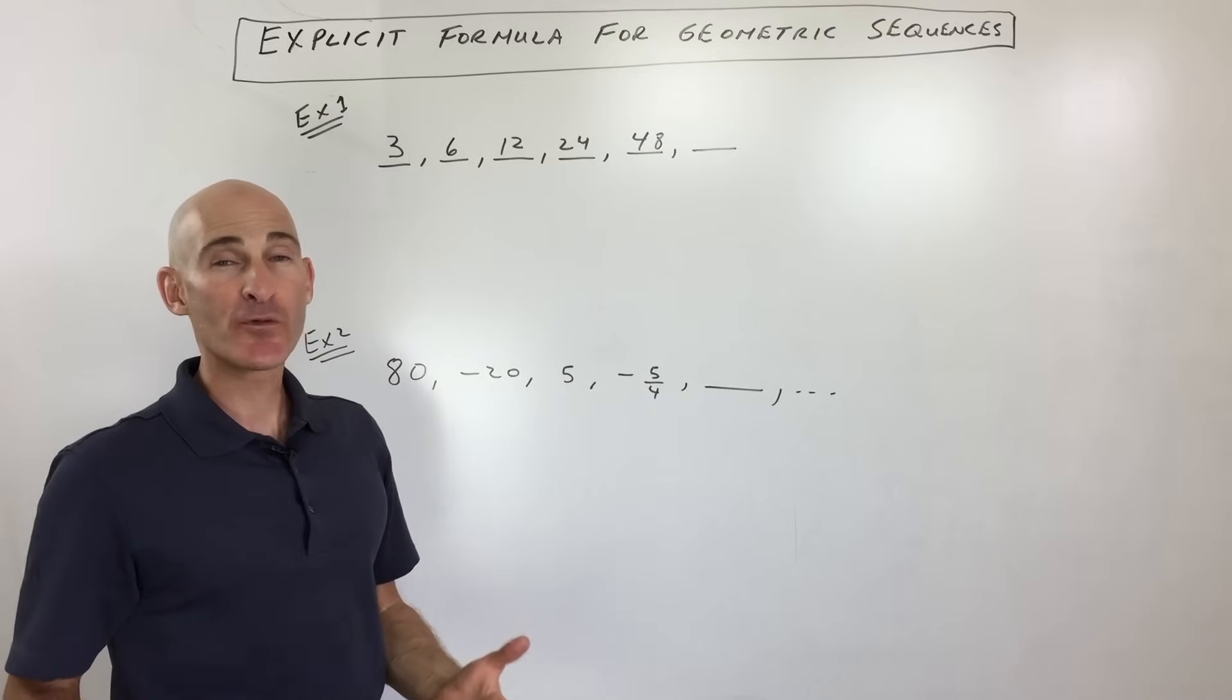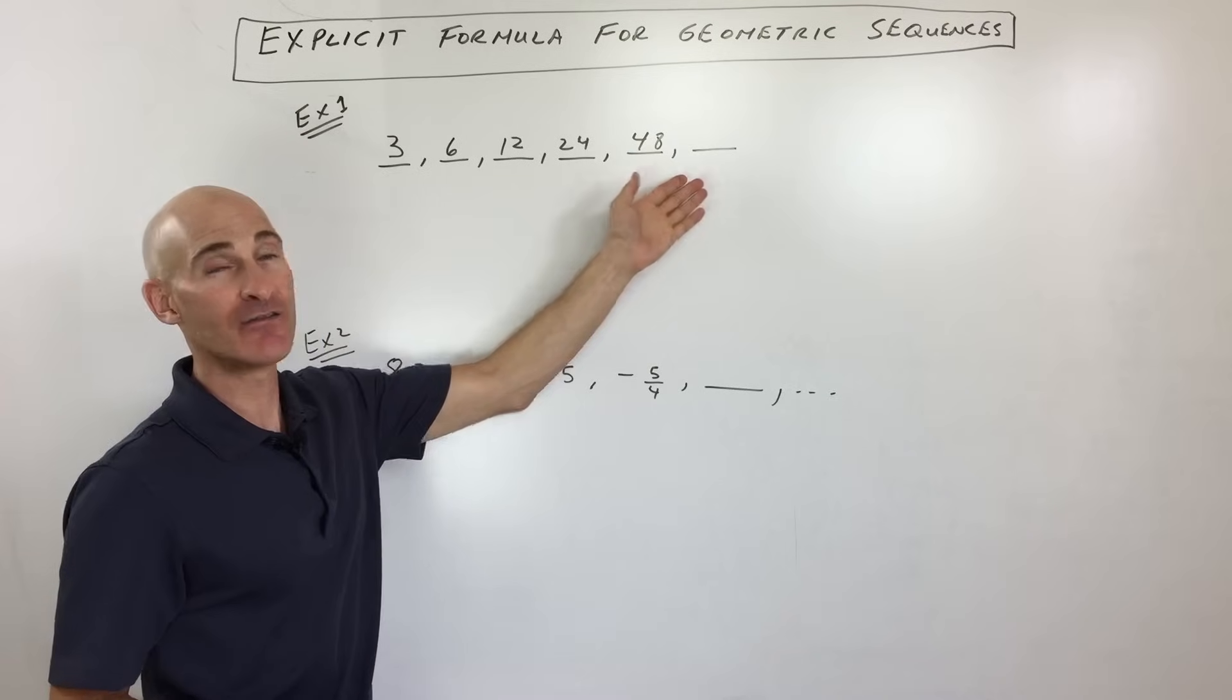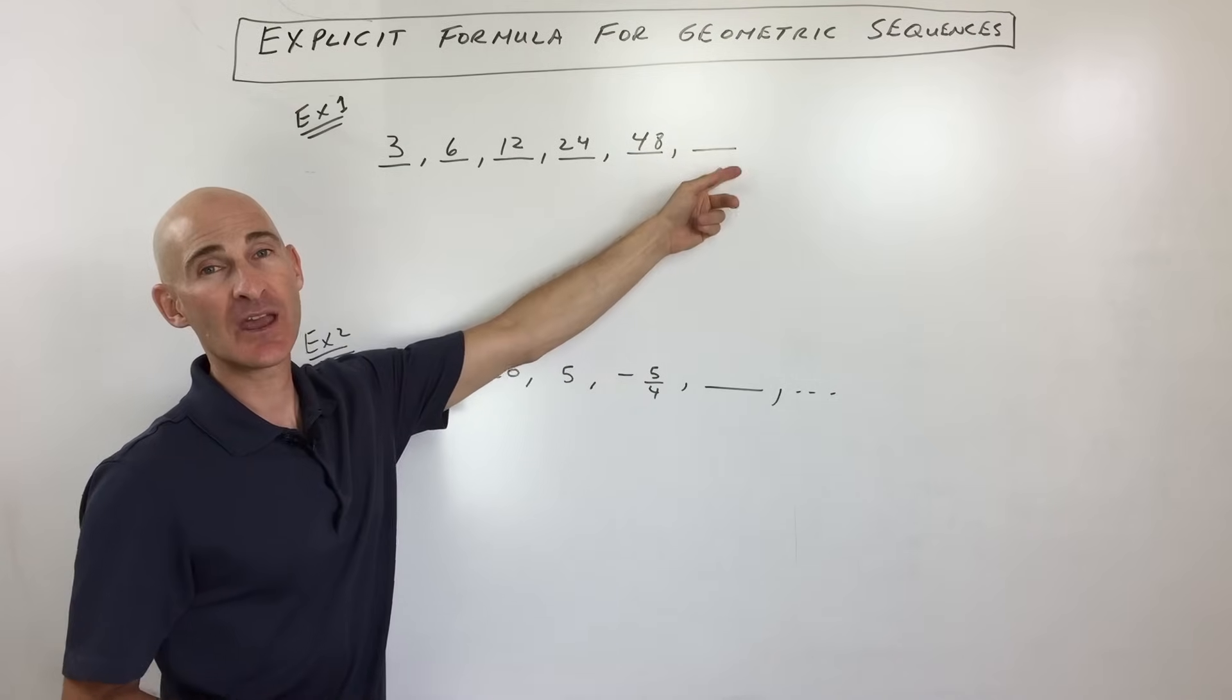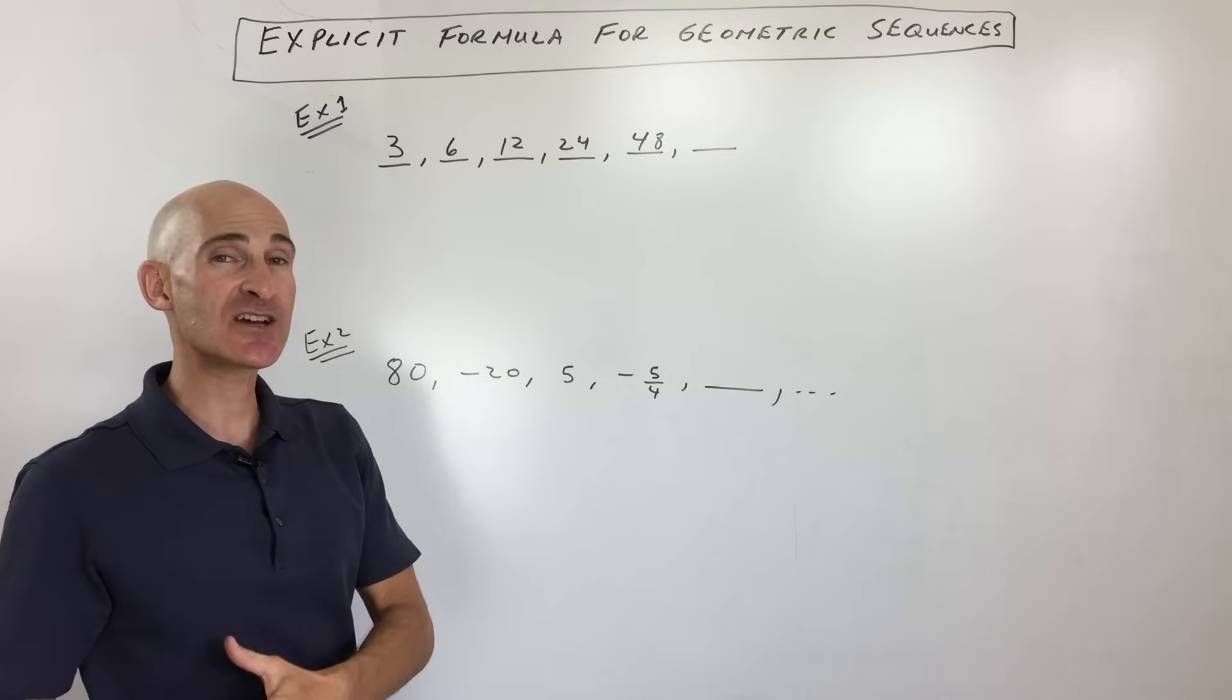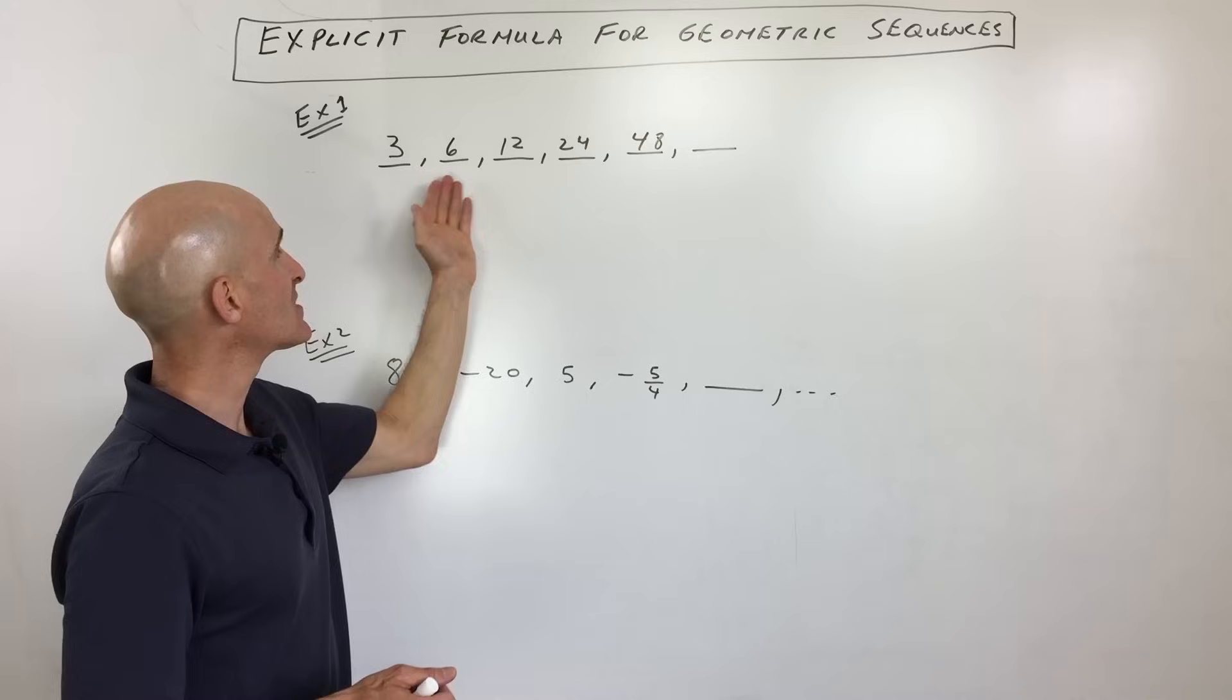What exactly is a geometric sequence? Well, first of all, sequence just means that it's a list of values. You can see that the values are separated by a comma. So a sequence is a list. A series is actually a sum - you're adding them together. You'll see plus signs in between. But a sequence is a list.